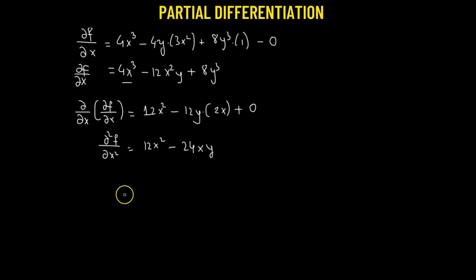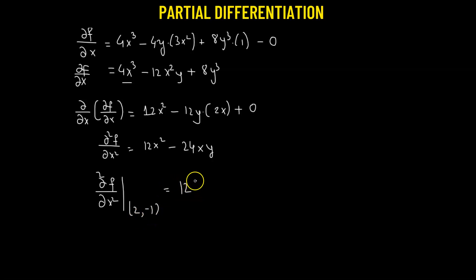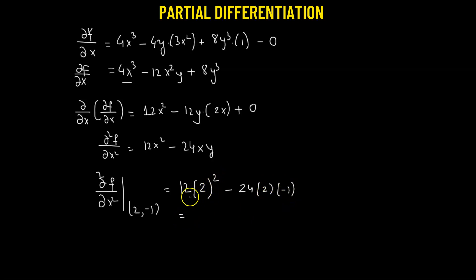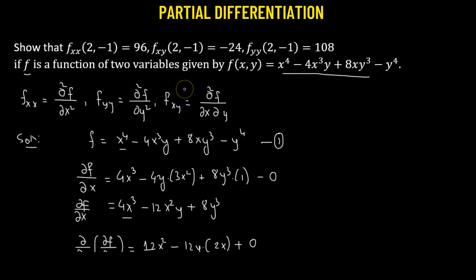Now we compute the value of this second partial derivative of f with respect to x at (2, -1), so x equals 2 and y equals negative 1. Substituting: 12 times x squared becomes 12 times 4, which is 48. Minus 24 times x times y becomes negative 24 times 2 times negative 1, which is positive 48. So 48 plus 48 gives us 96. We have shown that the second partial derivative of f with respect to x at (2, -1) is 96.